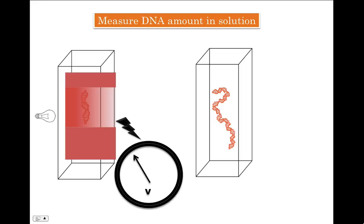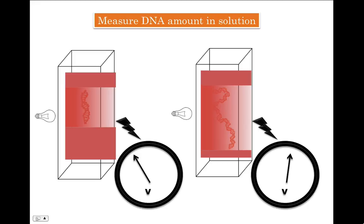So, a 3 microgram per ml DNA will absorb more light at 260 nanometer than 1 microgram per ml DNA concentration. And thereby, you will see proportionally higher spectrophotometer reading.